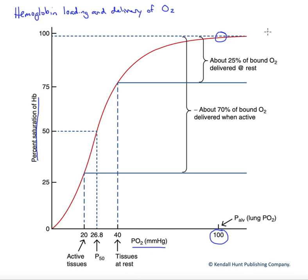That's maximum saturation. One of the reasons we want to maintain this alveolar PO2 of 100 is so we can maintain full saturation of our hemoglobin when we leave the pulmonary circuit.